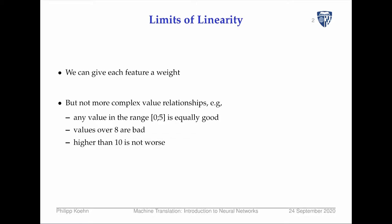There are limits to these linear models. We can give each feature a weight, but we can't handle more complex feature relationships — for instance, maybe a feature value in the range 0 to 5 doesn't matter, values over 8 are bad, but once it gets higher than 10 it doesn't make any difference anymore. That's a fairly non-linear relationship.